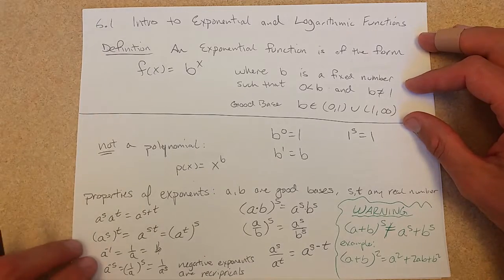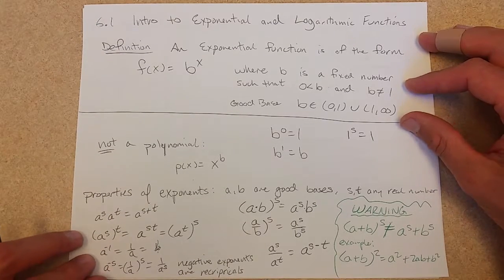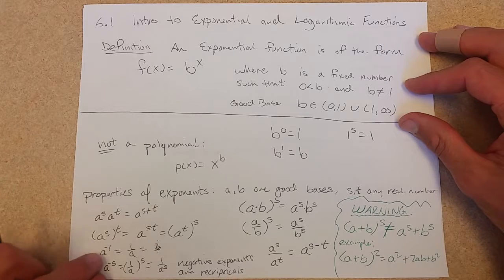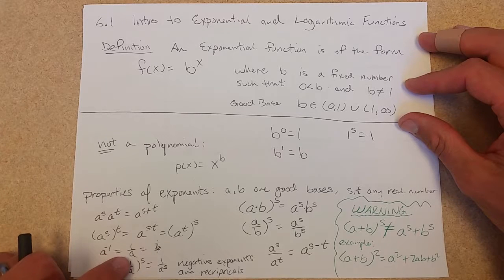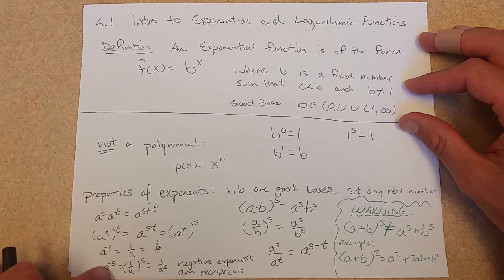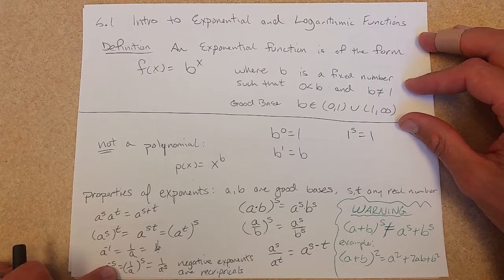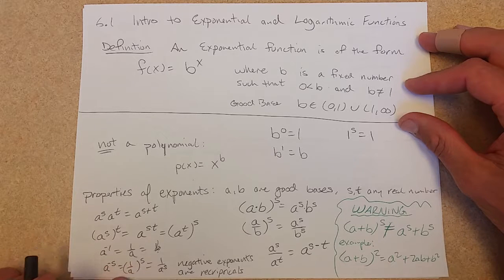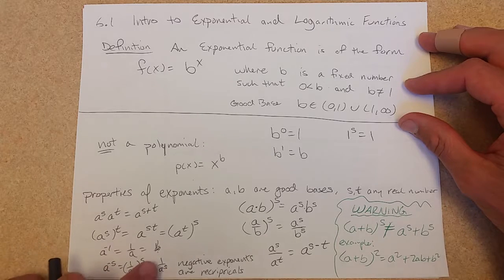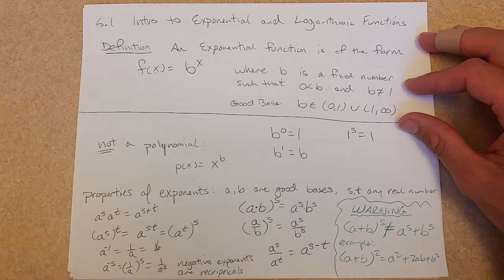What about negative first power? That is a reciprocal. Negative exponents are reciprocals. And a to the negative first is 1 over a. a to the negative s power, you could write it as 1 over a to the s. Just the reciprocal. Or 1 over a and just raise the a to the s.